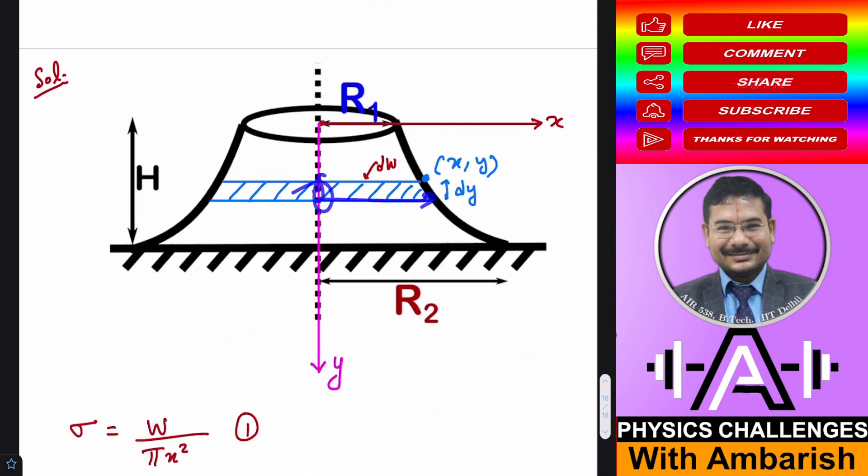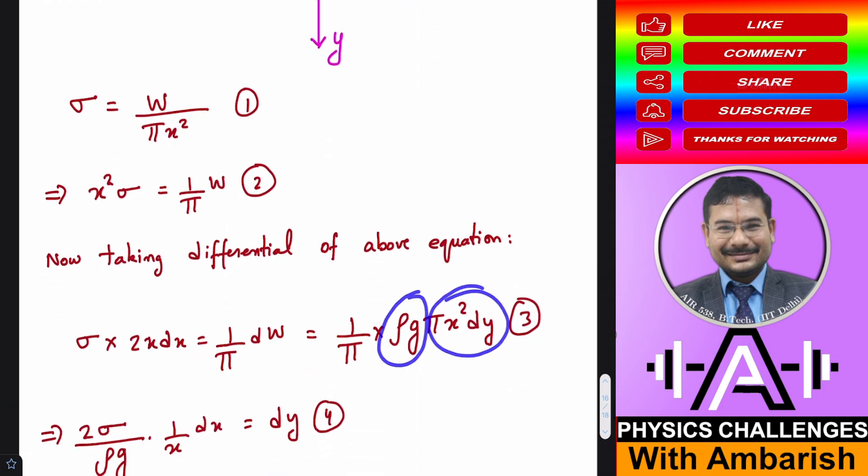And dw can of course be written as π x² dy because π x² is the base area of this disk and dy is the thickness. So π x² dy becomes the volume and you multiply it by density to get mass and g to get the weight.